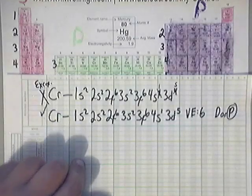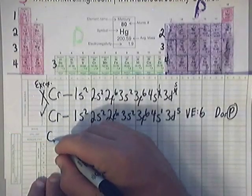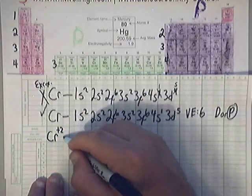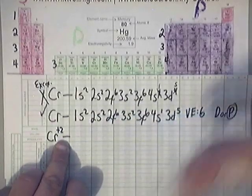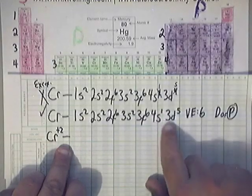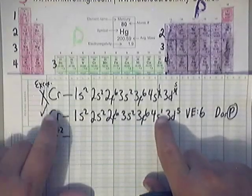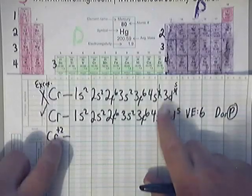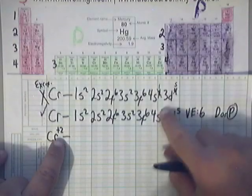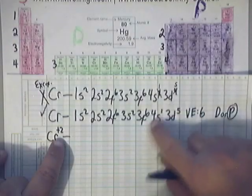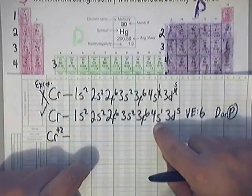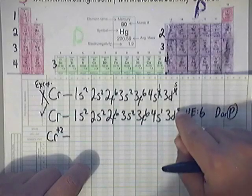Now let's look at an ion of it. One common ion of chromium is Cr+2. Basically, you've got to lose two valence electrons. If you look back up at chromium, you have to look at the one that is supposed to be correct, not the one that's wrong. You've got to throw away two electrons. You would throw away the one with the highest principal quantum number first, which is the 4S1. But when you get rid of 4S1, that's only one valence electron, so you've got to end up throwing away another one.